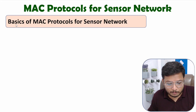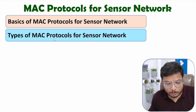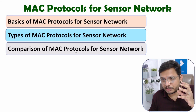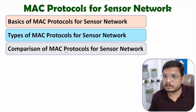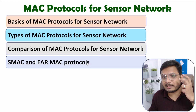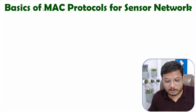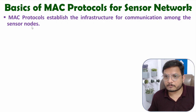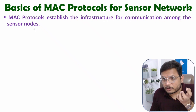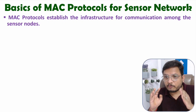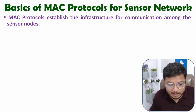In this video, first I'll explain the basics of MAC protocols, then I'll explain different types of MAC protocols, where I'll compare three categories based on channel allocation. MAC protocols establish the infrastructure for communication among the sensor nodes. Sensor nodes or sensor devices communicate with a gateway, and that infrastructure is provided by media access control protocols.